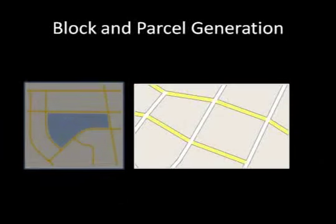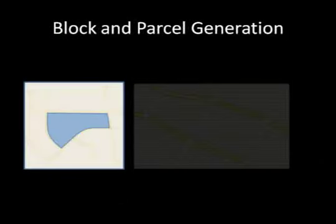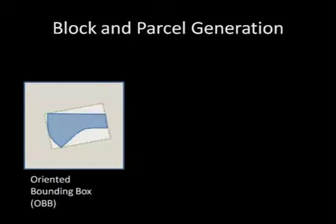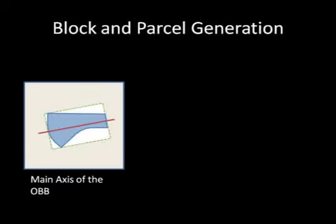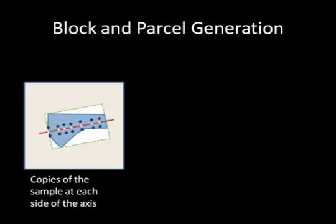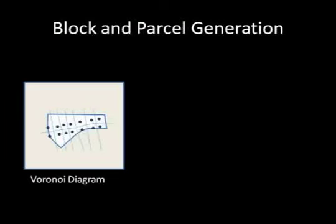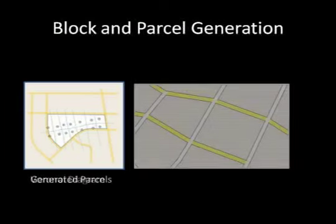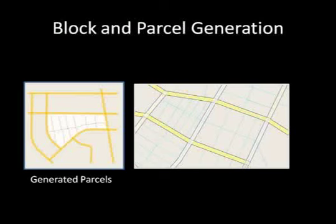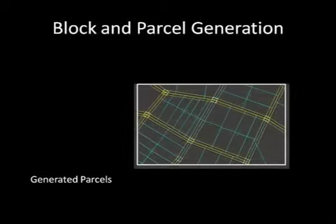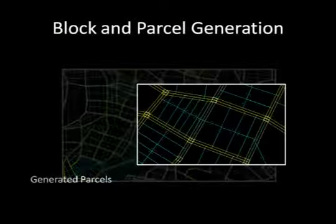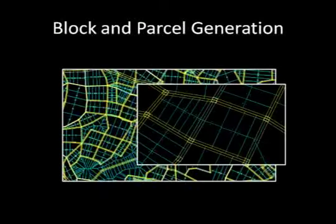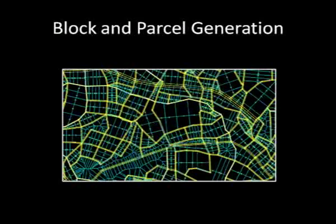Our approach to parcel generation calculates the oriented bounding box of the block, generates stochastic point samples along the main axis of the box, and constructs a Voronoi diagram from which parcels are defined. This approach guarantees that all parcels have access to at least one street. The process is repeated for all blocks.